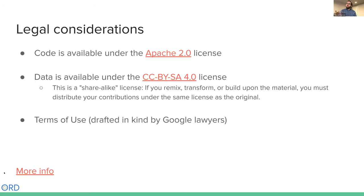I wanted to talk briefly about some of the legal considerations. We've tried to be very deliberate in both preserving open source and making sure that institutions generating proprietary data can contribute freely. The code — everything in the ORD-schema repository — is licensed under the Apache 2.0 license. The data itself is available under a Creative Commons share-alike license so that things that build upon the material have to be licensed on the same terms. We also have terms of use drafted for us by Google lawyers that explain more conditions for how the data is to be used and shared, available on the GitHub repository.